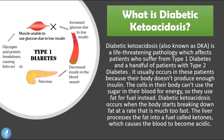DKA usually occurs because the body doesn't produce enough insulin, so cells can't use the sugar in the blood for energy and use fat for fuel instead. Diabetic ketoacidosis occurs when the body starts breaking down fat at a rate that is much too fast. The liver processes the fat into a fuel called ketones, which causes the blood to become too acidic.